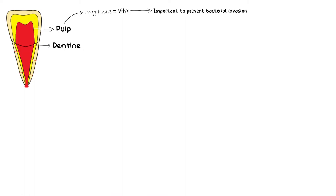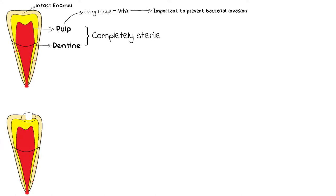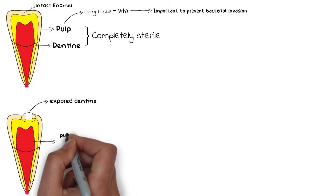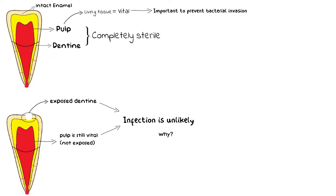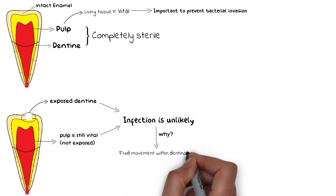Under normal circumstances, dentine and the pulp are completely sterile and isolated from oral microorganisms because dentine has a layer of enamel above it which keeps the dentine protected at all times. Even if the dentine gets exposed because of caries, tooth preparation, or something else, but the pulp still remains vital, then pulpal infection is unlikely until dentinal thickness is reduced considerably. In a vital pulp, the outward movement of dentinal fluid within the dentinal tubules delays the intratubular invasion of bacteria.